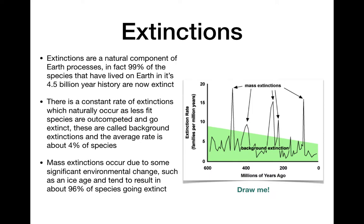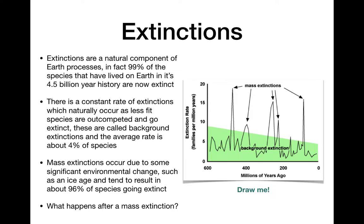Mass extinctions are different — think of the dinosaurs as a famous example. When a major environmental change affects the entire Earth, like an ice age, it can result in up to 96% of species going extinct. On the graph, the peaks represent mass extinctions — some are bigger than others. This happens because the environment changes so significantly and so quickly that most organisms cannot adapt in time and go extinct.